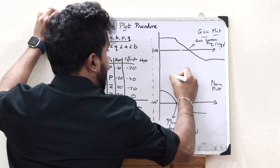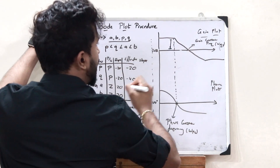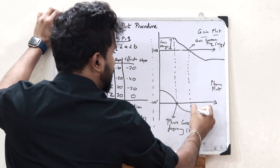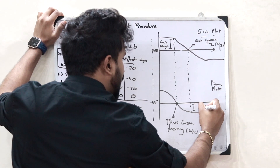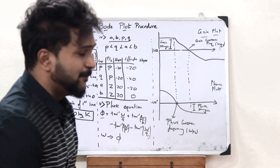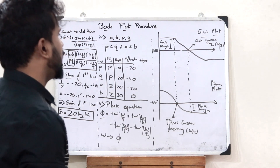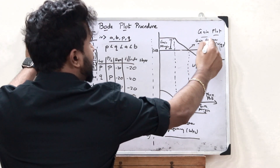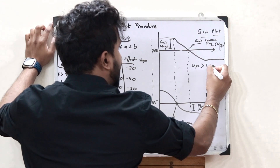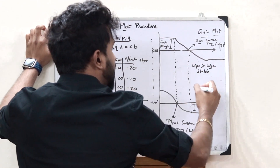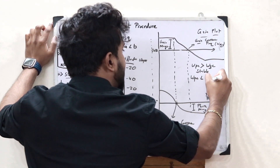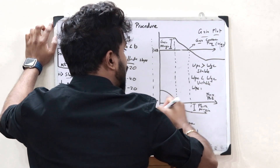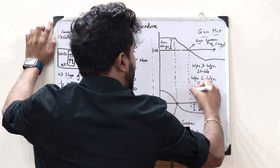When we extend this particular line upwards, that distance is what we refer to as the gain margin. Similarly, when we extend this particular point downwards, that portion is what we refer to as the phase margin. From this diagram, we can check whether a control system is stable or unstable. If the phase crossover frequency ωpc is greater than the gain crossover frequency ωgc, then the control system is stable. If ωpc is less than ωgc, it is unstable. If they are equal, then it is marginally stable.